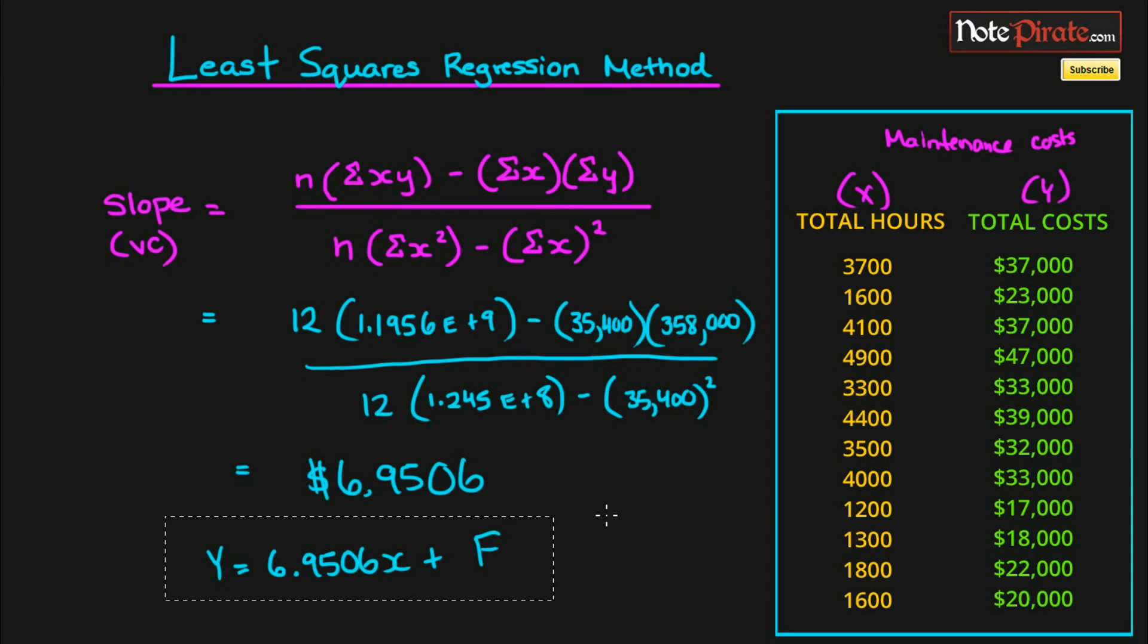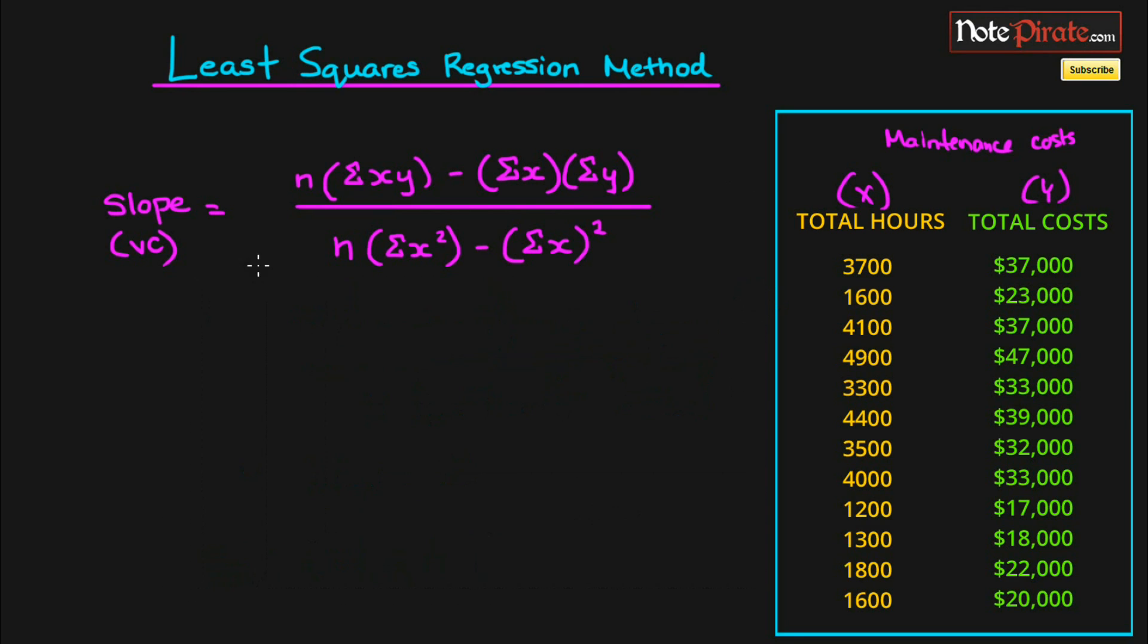The simple way to find out the fixed portion is to just take one of the data points. Let's use this one right here. We're going to say total cost 37,000 equals our variable 6.9506 times x plus f, and then we're going to substitute in the 3,700.